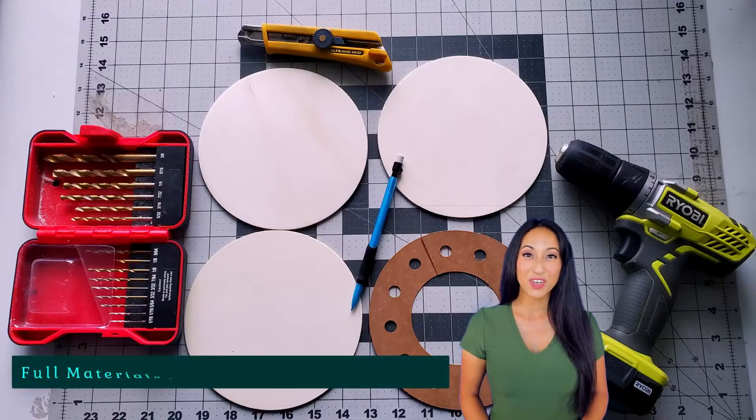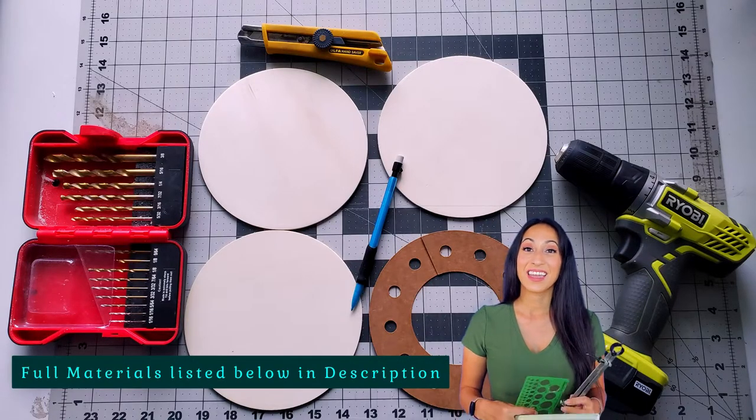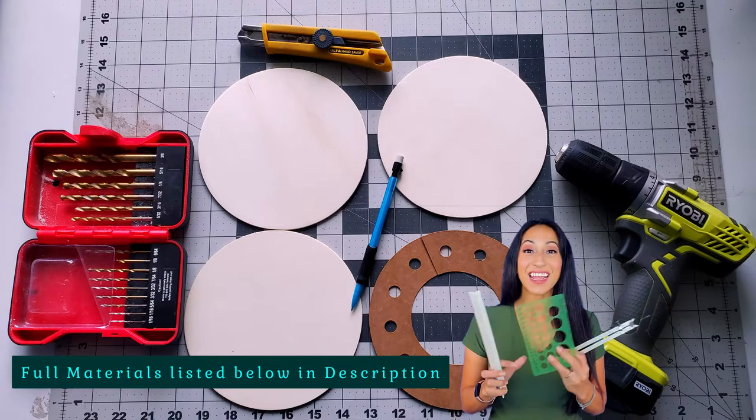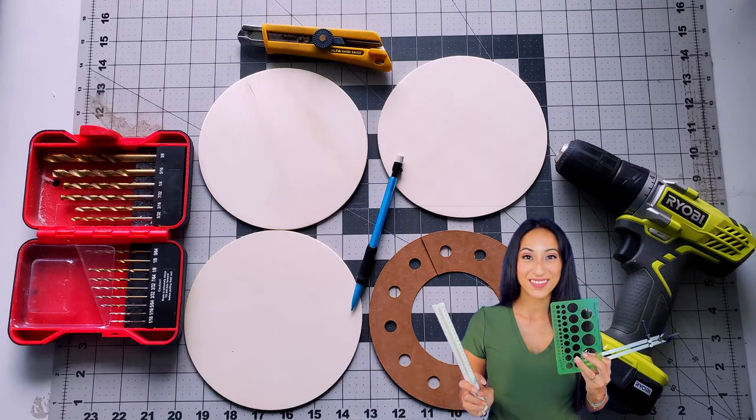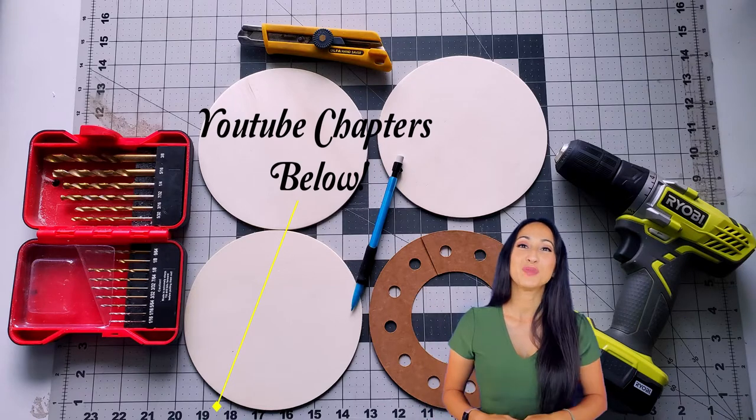If you don't have a Cricut to make this stencil, you can also use a compass, a ruler, and a circle stencil to help you out. And a reminder, you can skip ahead with the YouTube chapters below.